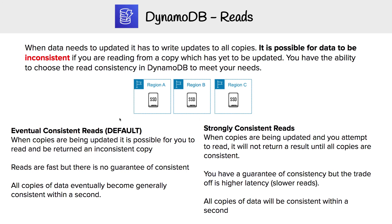For eventual consistent reads, if you can tolerate something being inconsistent because it's not critical, that's one option. Those are your two choices depending on your use case and the trade off you're willing to accept.